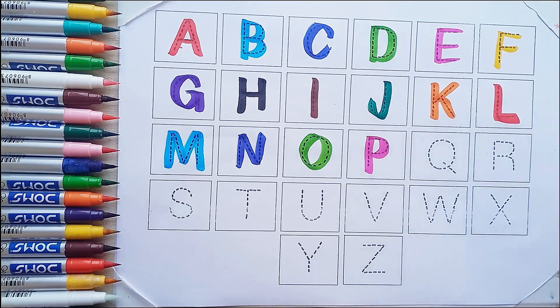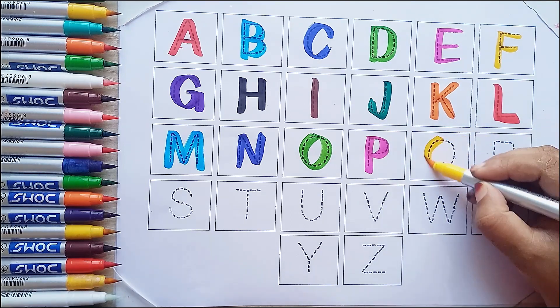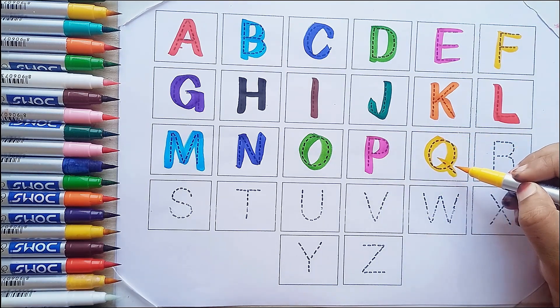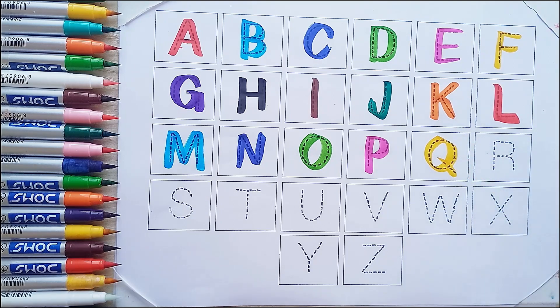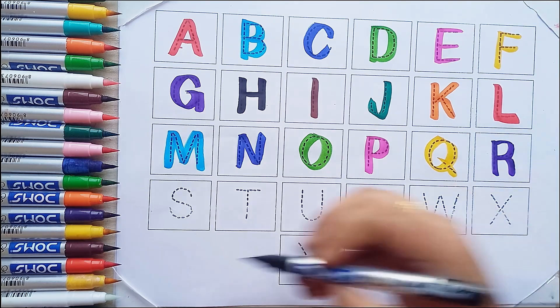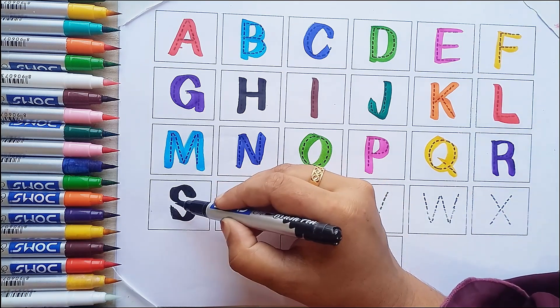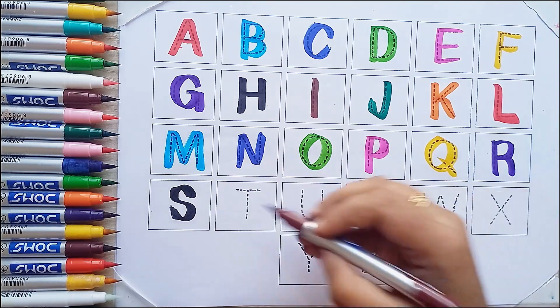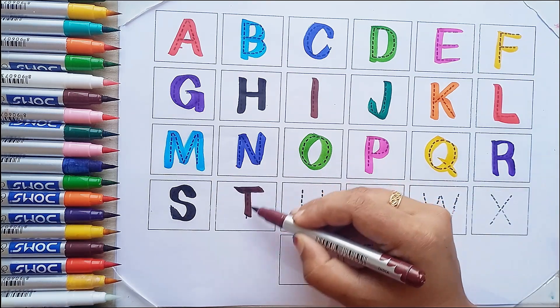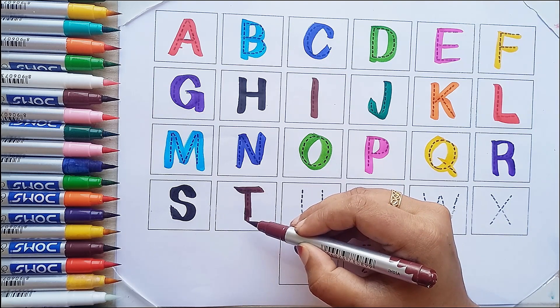Yellow color Q, Q for Queen. Violet color R, R for robe. Black color S, S for Star. Brown color T, T for Tiger.